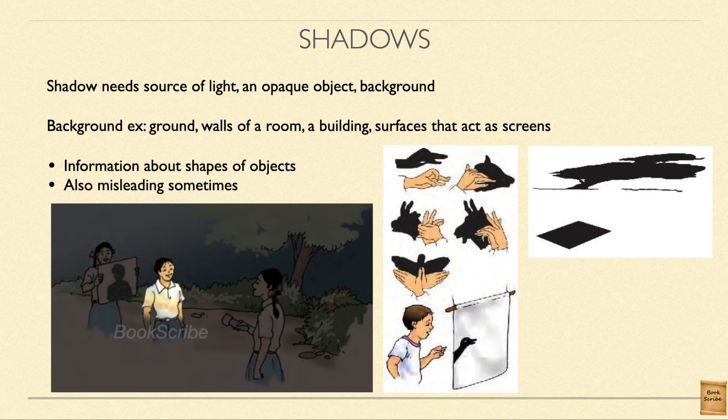From this, we learn that a shadow falls on a screen. The screen can be anything — the ground when you stand in sunlight, the walls of a room, a building, or any surface that can act as a screen. Using shadows, we can learn about the shapes of objects. For example, your shape falls on the ground when you stand in the sun, or an eraser or pencil's shape falls on any screen like a wall or building. But sometimes shadows can also mislead us — for example, using our hands we can make different animal shapes, which is a trick and fun, but also misleading.